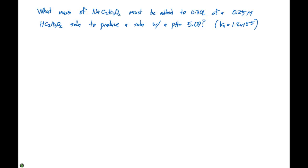In this example problem, we're asked what mass of sodium acetate must be added to 0.030 liters of a 0.25 molar acetic acid solution to produce a solution with a pH of 5.09. The Ka for acetic acid is given as 1.8 times 10 to the minus 5.